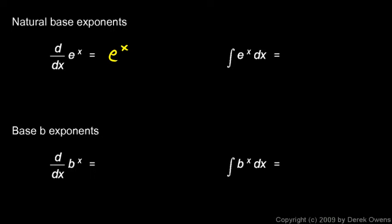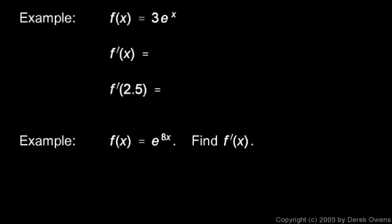Now, we can work a couple of examples. And these aren't that hard. Here we're told that f of x is equal to 3 e to the x. Find f prime of x. Well, the 3 as a constant multiple there just sits there. And the derivative of e to the x is e to the x. So the derivative of 3 e to the x is 3 e to the x. And then we're told to find f prime of 2.5. So that would just be 3 e to the 2.5. Not too hard. And if you punch that into the calculator, it's approximately 36.55.